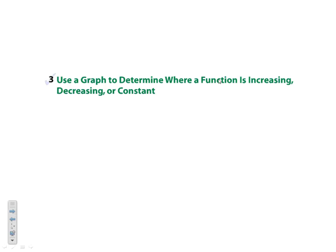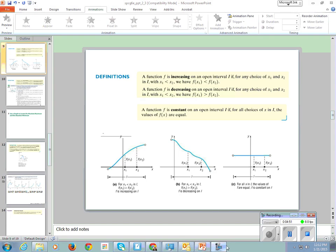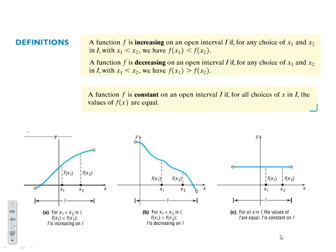Now we're going to look at increasing, decreasing, or constant — this section is very easy. A function is increasing if as your x value increases your y value increases. It's decreasing if your x value increases but your y value decreases. It's constant if there is no change in y as x increases. So: increasing means y is getting bigger, decreasing means y is getting smaller, and constant means it doesn't change.